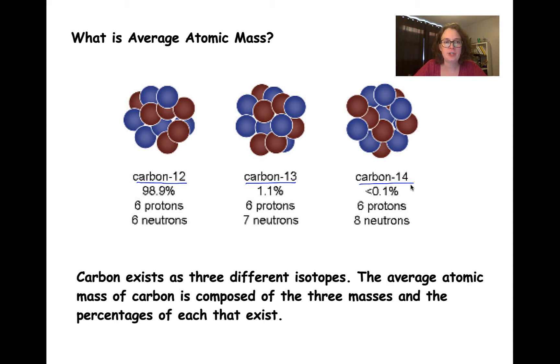They exist in nature in different percentages. Most of the carbon that we have is going to be carbon-12. 98.9 percent of carbon will be in the carbon-12 form of the isotope. In smaller amounts, we have carbon-13 and carbon-14.